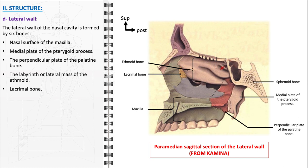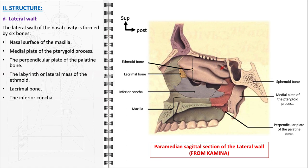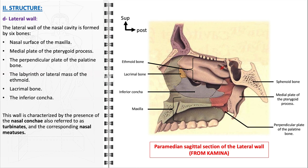The lacrimal bone, located in the anterior portion, houses the nasolacrimal duct, which is essential for tear drainage from the eyes into the nasal cavity. The inferior concha, also known as the inferior turbinate, is an independent bone significant for regulating airflow and conditioning within the lower part of the nasal cavity. In addition, the lateral wall features the nasal conchi, also referred to as turbinates, and the corresponding nasal meatuses. Below each turbinate lies a corresponding meatus which serves as a pathway for air and facilitates drainage from the paranasal sinuses and the eustachian tubes.